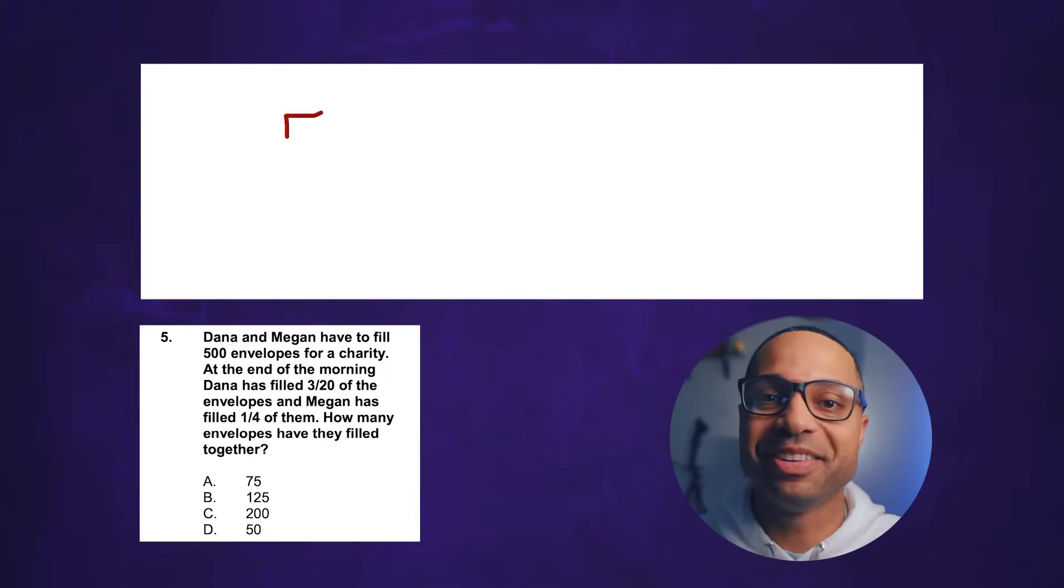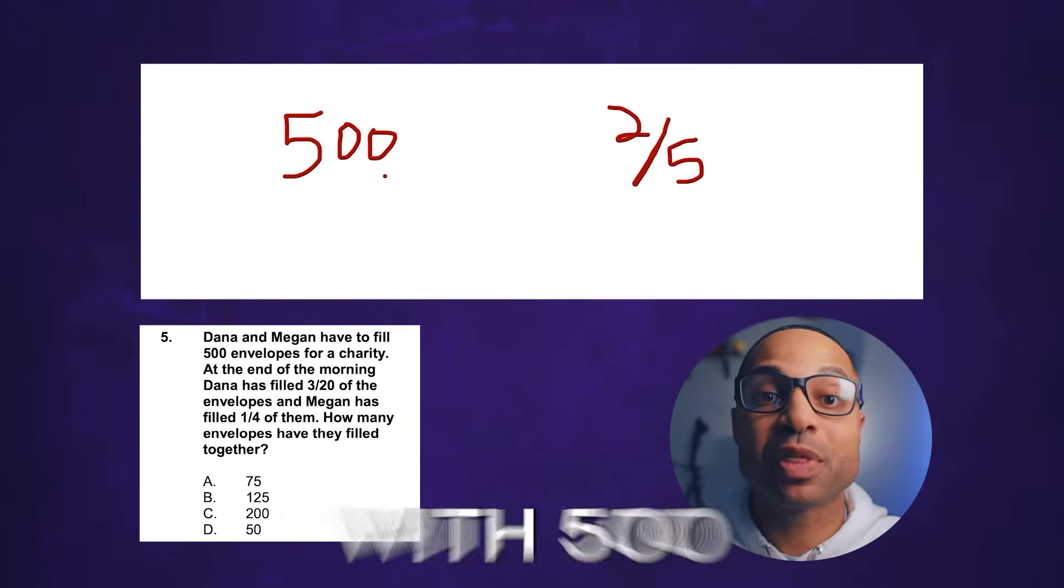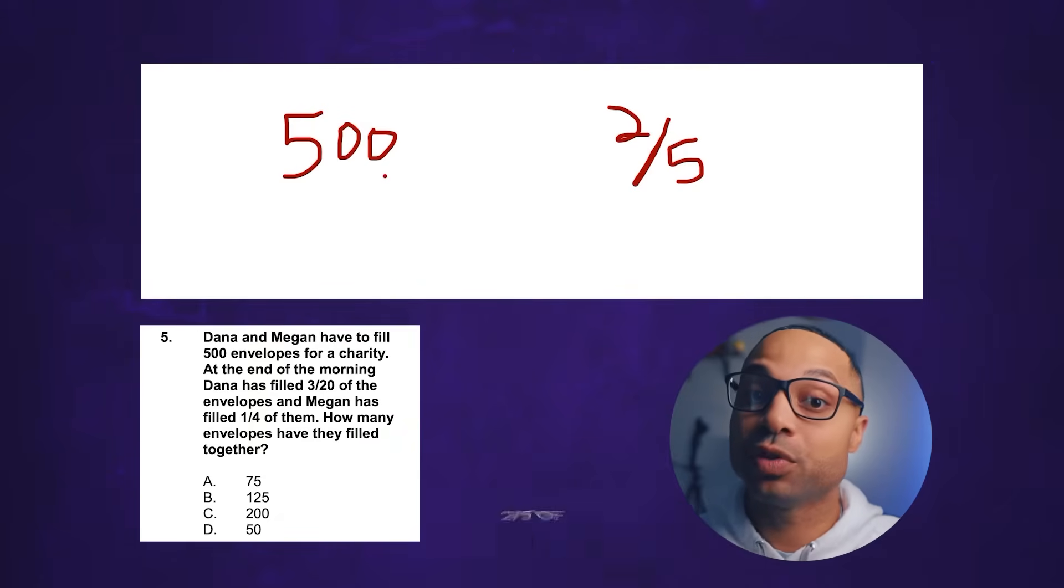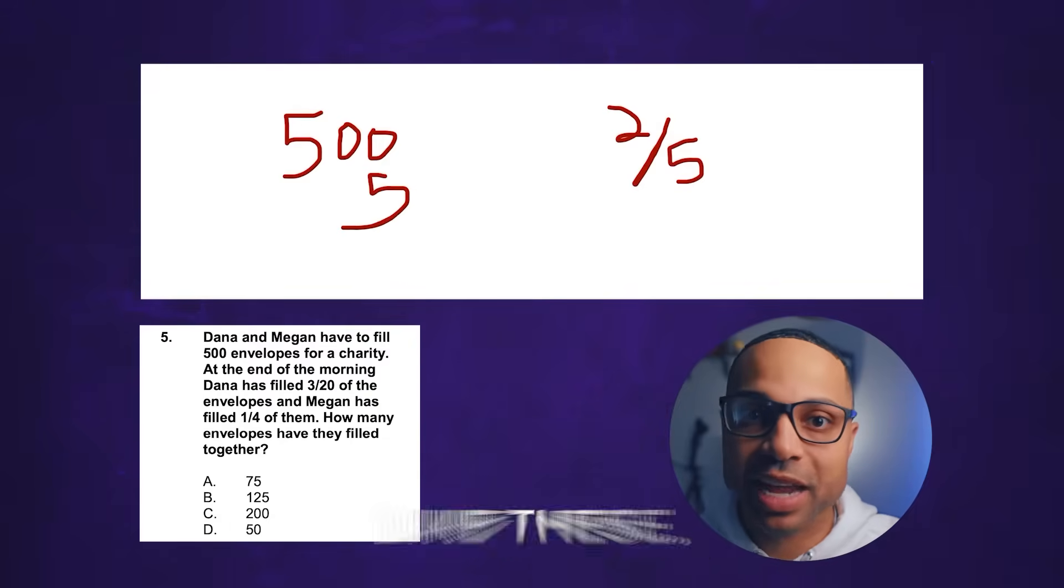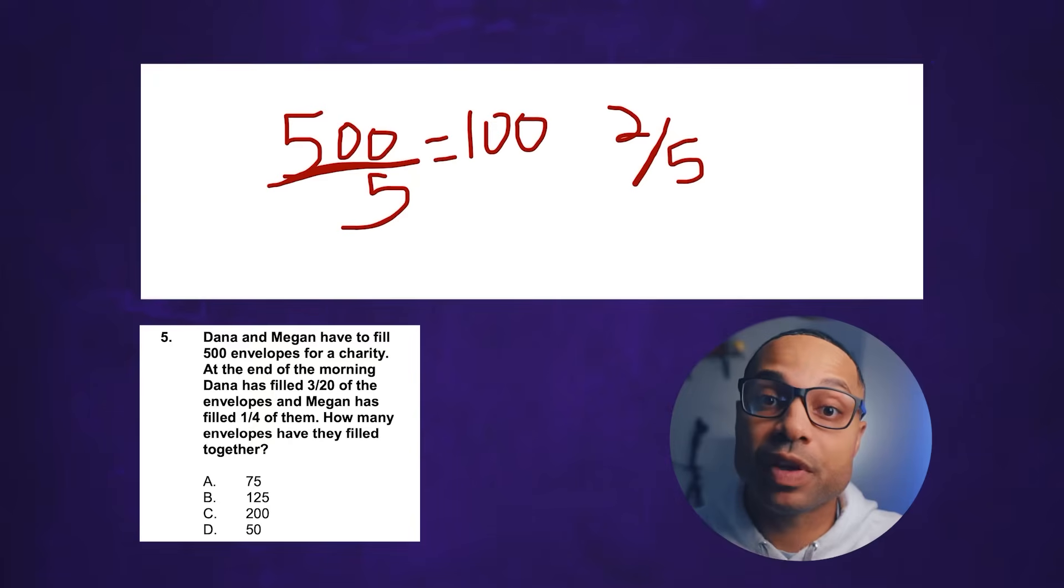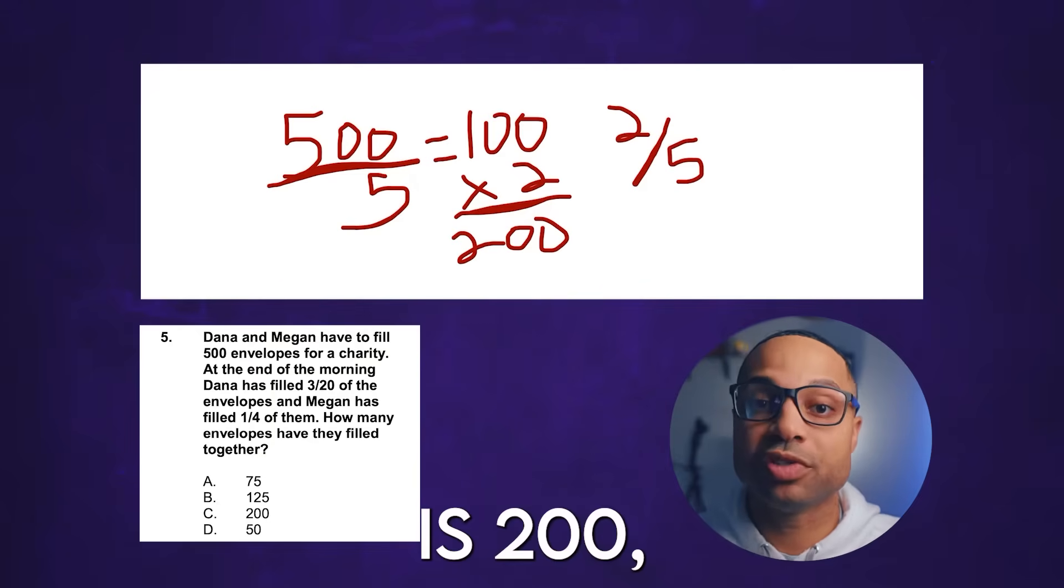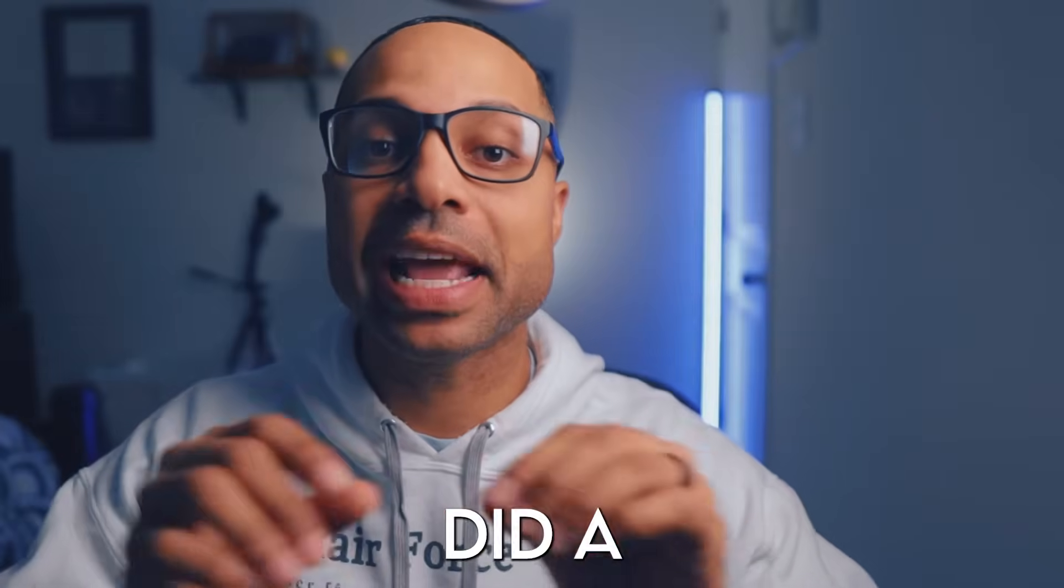That is the amount of envelopes that Dana and Megan have filled. So now we want to look at how many envelopes we started with. We started with 500 envelopes. Dana and Megan filled 2 fifths of them. The question is asking how many did they fill. The easiest way for me is to break down the fraction. It's saying 2 fifths. So I want to know what 1 fifth of 500 is. And in order to do that I just divide 500 by 5 and I get 100. So if I times that by 2 that gives me 200. So now I know that 2 fifths of 500 is 200. Meaning that Dana and Megan filled 200 envelopes overall.